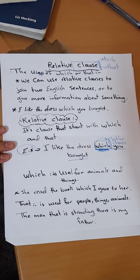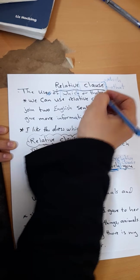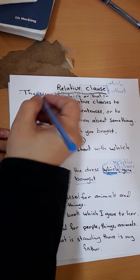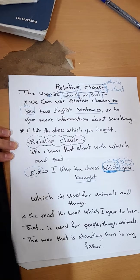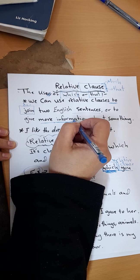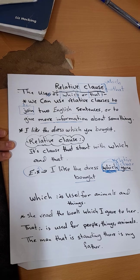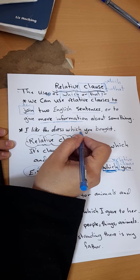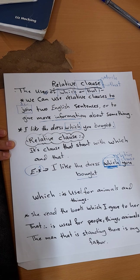Now let's know the uses of 'which' or 'that'. We can use a relative clause to join two English sentences, or to give more information — extra information — about something. So relative clauses are used to join two sentences or to give more information about something. For example: 'I like the dress which you wore.' 'Which you wore' is the relative clause because it starts with 'which'.